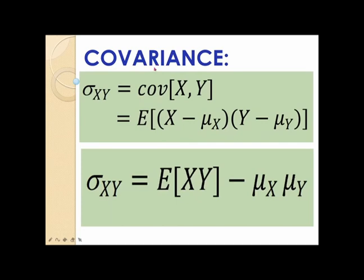The covariance of two random variables x and y can be computed using either of two formulas. Sigma x, y is the standard notation for covariance. Covariance of x, y is equal to the expected value of the product x minus mu of x times the quantity y minus mu of y. The second equation is the computational formula: sigma x, y is equal to the expected value of xy minus mu of x times mu of y.